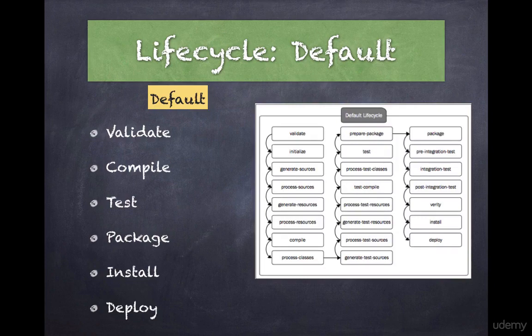Then we have the package phase. Package assembles the compiled code into a distributable format such as a JAR or WAR file. If you look in your pom.xml, in the second or third line where it says packaging, you define what type of package you want — it could be a JAR file, WAR file, or a Maven plugin.